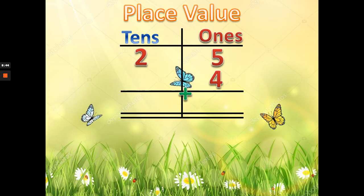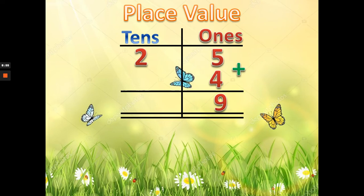Now we are ready to add. First we add the ones place: 5 plus 4 equals 9. Then in the tens place, we just bring the 2 down. Easy! Again, if you have questions you can ask your teacher.